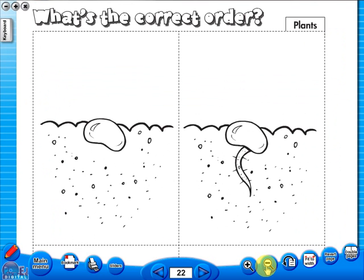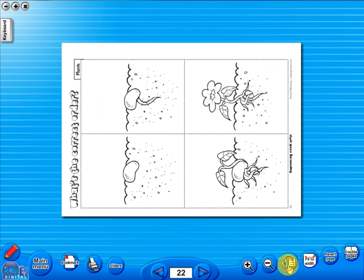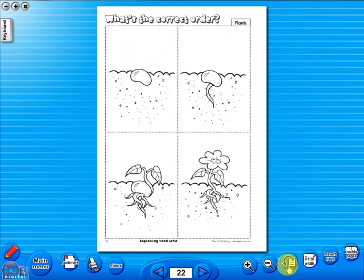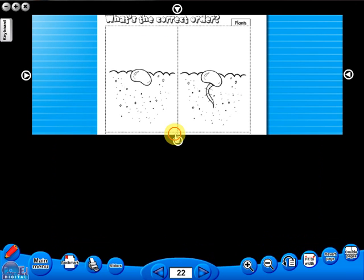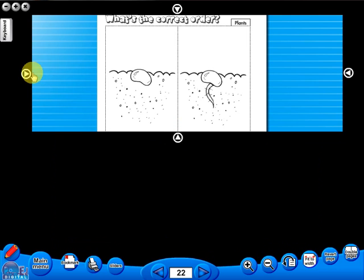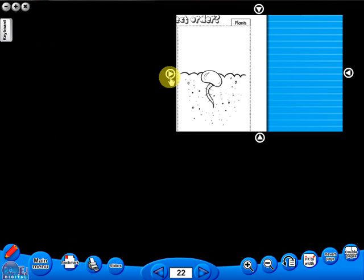One can also use the rotate icon to display the worksheet in a horizontal position. This toolbar also includes the sliders feature, which allows the teacher to shield parts of the page until they are required. This could be useful to focus on one particular area of a worksheet when working with a class.